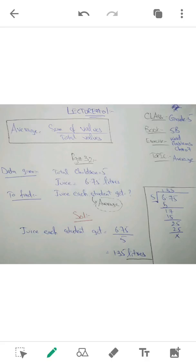So I have applied the formula, and juice each student gets is actually the average amount of quantity that every child is having. So you can simply substitute the values in the formula: 6.75 divided by five. What is 6.75? It's the sum of values. And what is five? The total number of values.